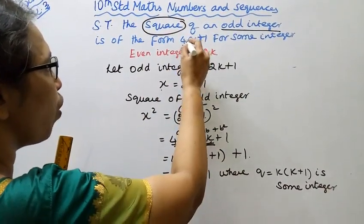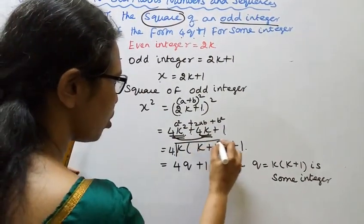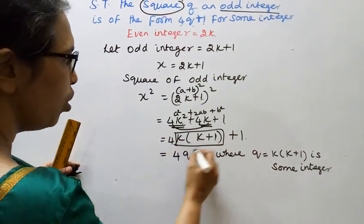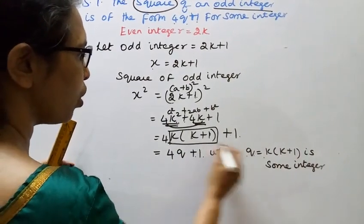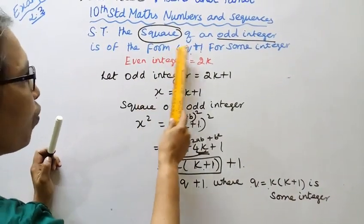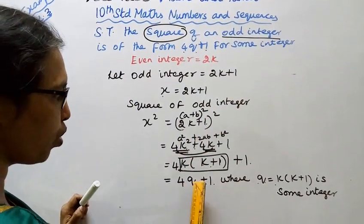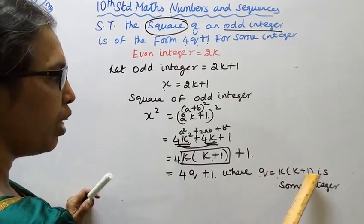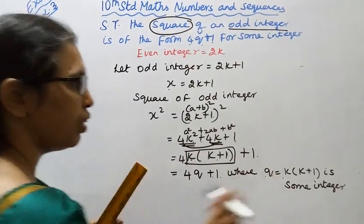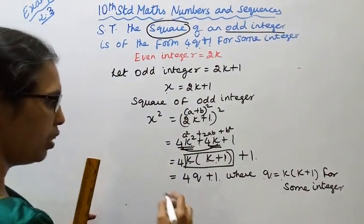This equals 4 into K into K plus 1 plus 1, which is 4 into Q plus 1 where Q equal to K into K plus 1, is some integer. Now the formula is in the form 4Q plus 1 for some integer, where Q equal to K into K plus 1.